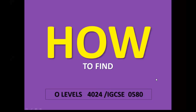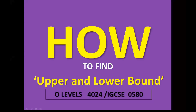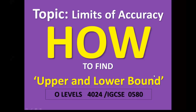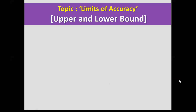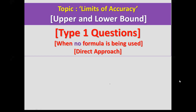Hello everyone. In this video you will learn how to find upper bound and lower bound for the topic limits of accuracy. There are two types of question. In type one questions, when no formula is being used, this is the direct approach. Let's take some examples from past papers, O Level past papers.